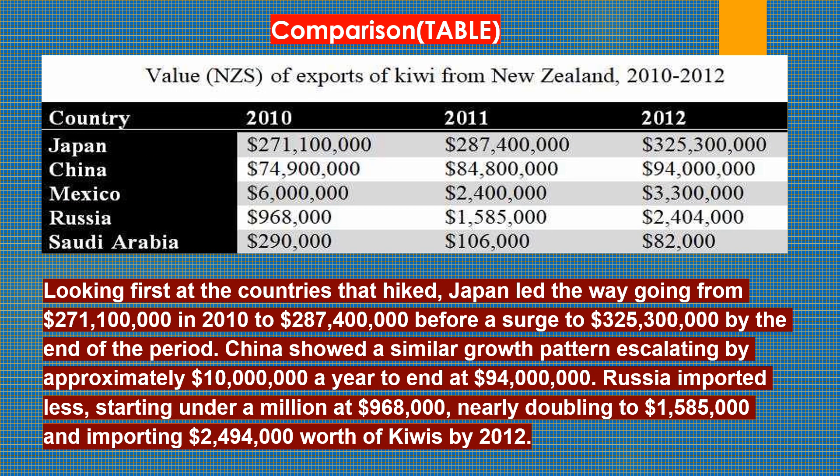Looking first at the countries that increased: Japan led the way, going from 271,000,000 in 2010 to 287,400,000, before surging to 325,300,000 by the end of the period. China showed a similar growth pattern, escalating by approximately 10 million dollars a year to end at 94 million dollars. Russia imported less, starting at 968,000, nearly doubling to 1,585,000, and reaching 2,494,000 worth of kiwis by 2012.